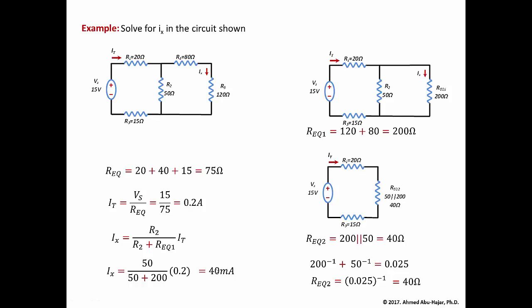In summary, to solve a single source circuit with known resistor and source values, find R equivalent and then use voltage and current dividers. This is easier than nodal or mesh analysis. For single source circuits, R equivalent combined with current and voltage dividers is the recommended technique, as demonstrated in this example where we found IX using a current divider.